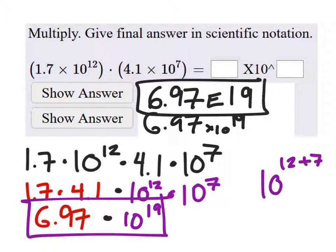This one's in scientific notation for the calculators, so it's called E notation. It means the same thing. Okay. But this is our final answer, so in the boxes we would put 6.97 and to the power of 19.